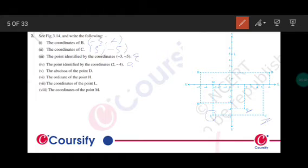The abscissa of the point D. Abscissa means the point, or the part of the x-axis. So the point D has abscissa that is 6.